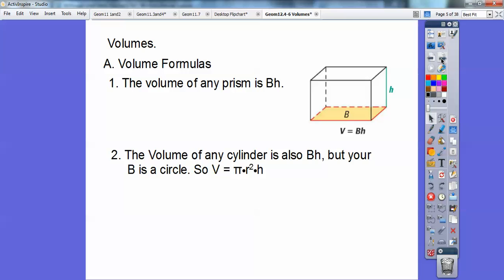The volume of any cylinder is also Bh, but remember your B, your base, is a circle. So the volume is πr²h, because the area of a circle is πr². So there's our cylinder right there.